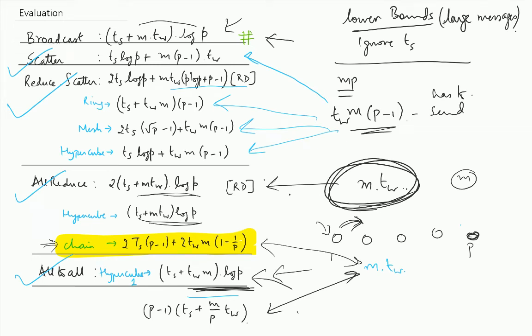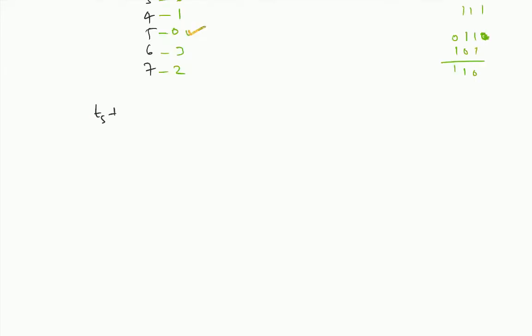Okay, broadcast. So for broadcast we studied recursive doubling. What was the cost? The cost was Ts plus MTW times log P, right? So this does not match the lower bound. The only lower bound I know is MTW for broadcast. Why? Because the root has to send out all the data.